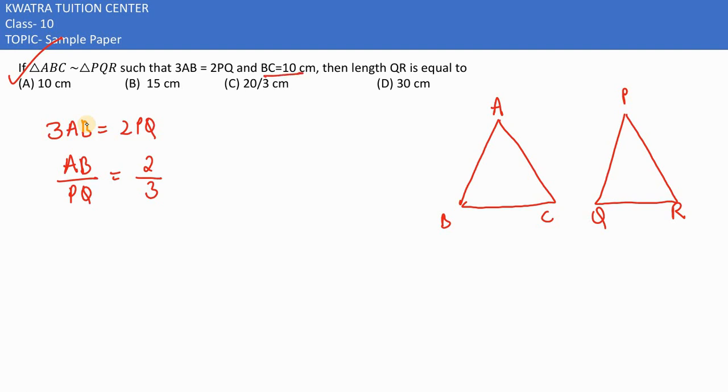And BC's relation, what is it? 10 cm. So BC's relation, and you need to find QR. QR's length. As we know, all sides are proportional.